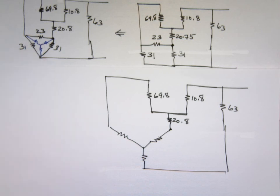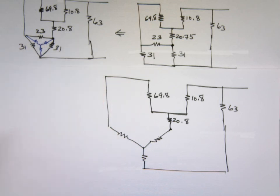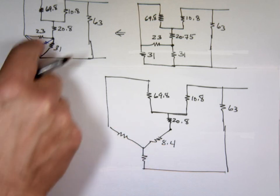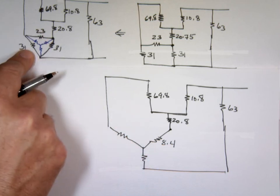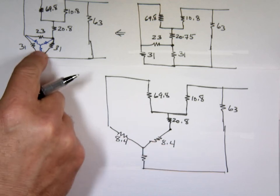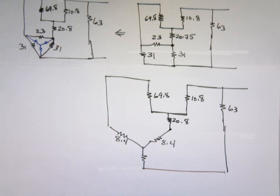So to get this value is going to be this times that over 85. 31 times 23 divided by 85, 8.4. To get this value, 23 times 31 divided by 85 is the same number. And to get this value is going to be 31 times 31 over 85, 11.3.